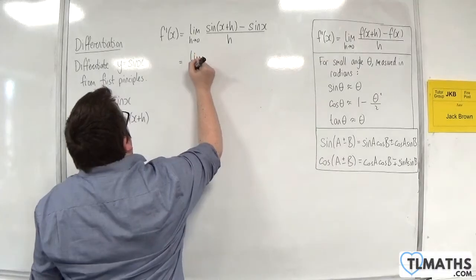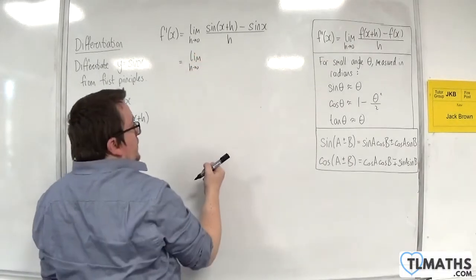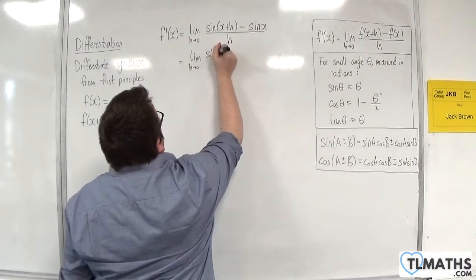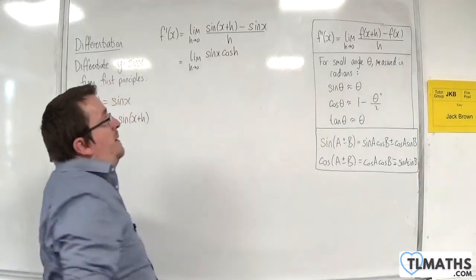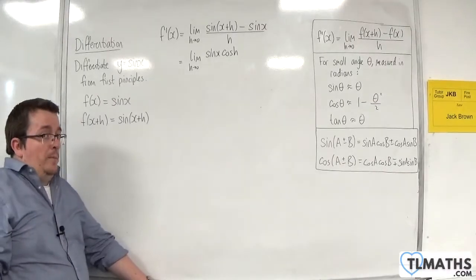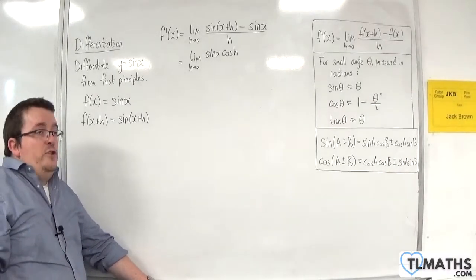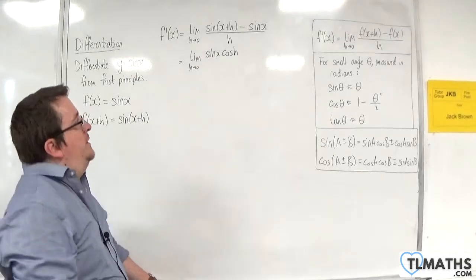So we have the limit as h tends to 0 of sin x cos of h. Now those of you further mathematicians who might have met hyperbolic functions at this point, this is not cosh. Just to be clear.